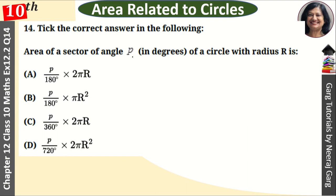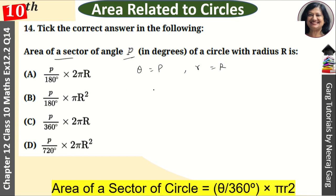See, in area of sector, we have the angle P, the value of theta is P and the radius is R. And we have the formula of area of sector, that is theta upon 360 into πR². Okay?